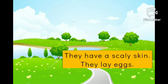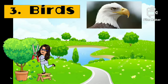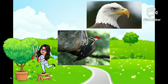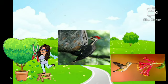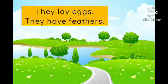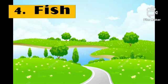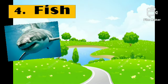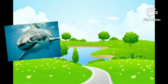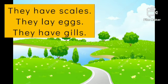Then we have birds, like eagles, woodpeckers, and hummingbirds. They lay eggs and they have feathers — they fly high! Then we have fish, like sharks, swordfish, and glowfish. They have scales, they lay eggs, and they have gills.